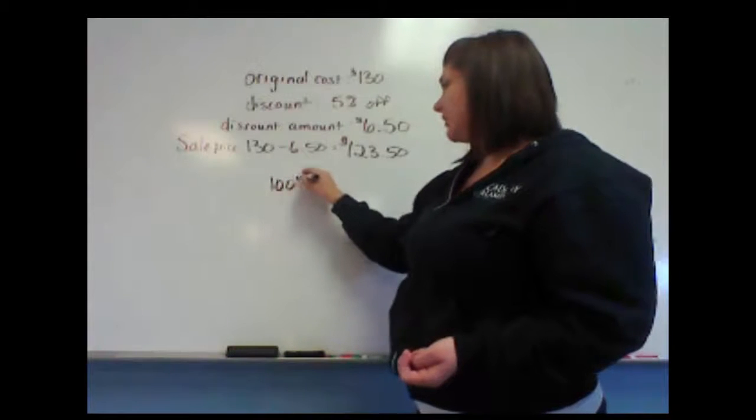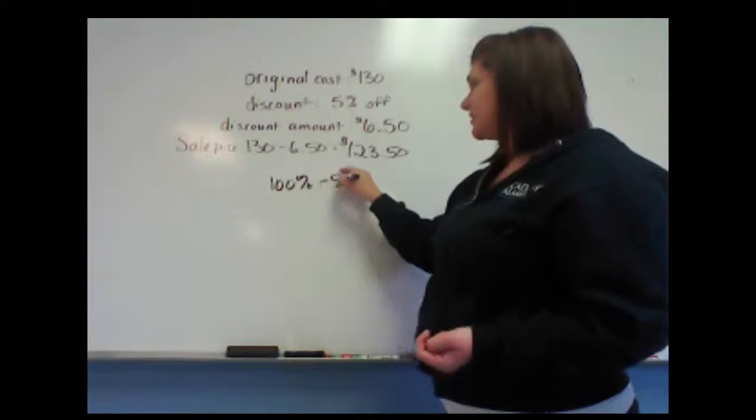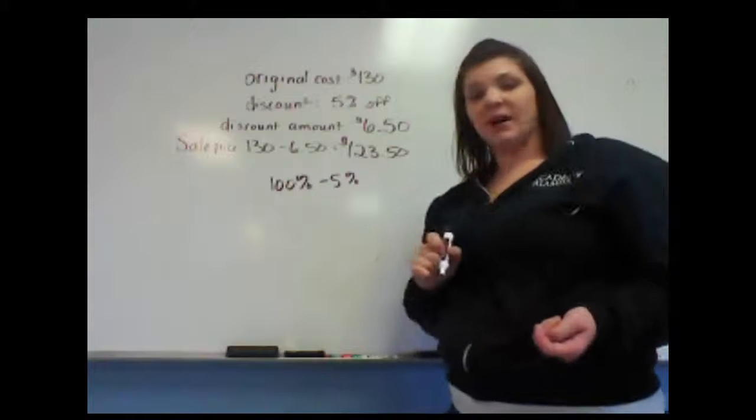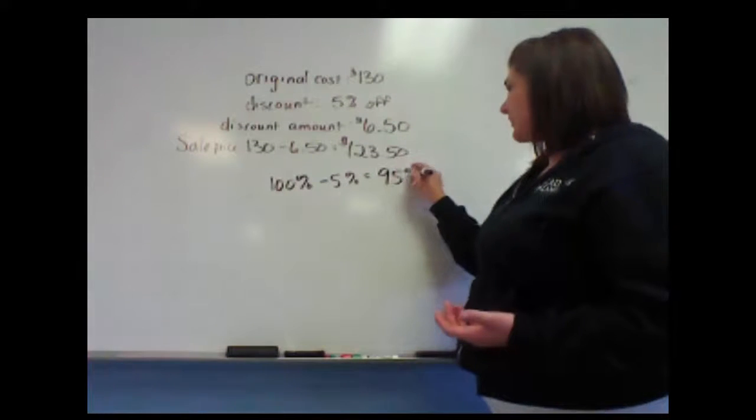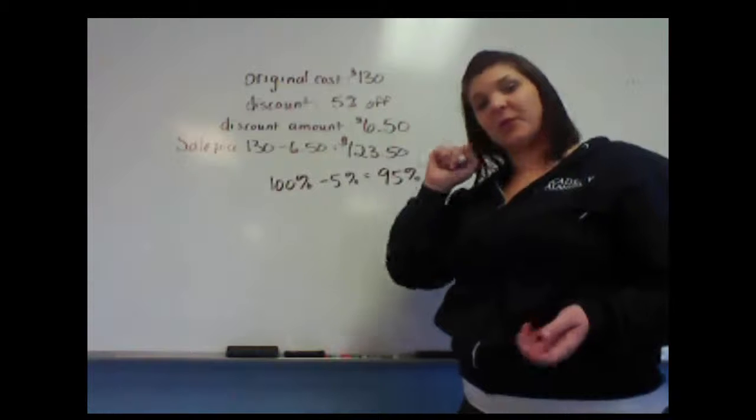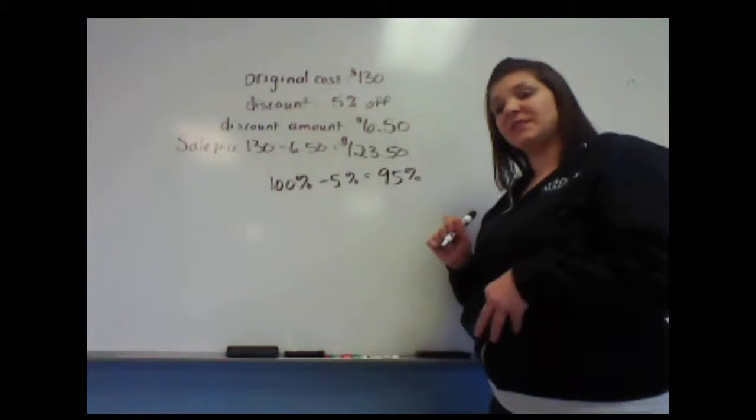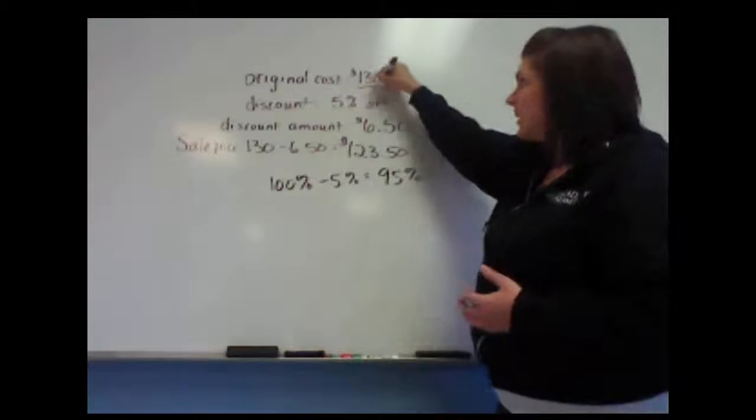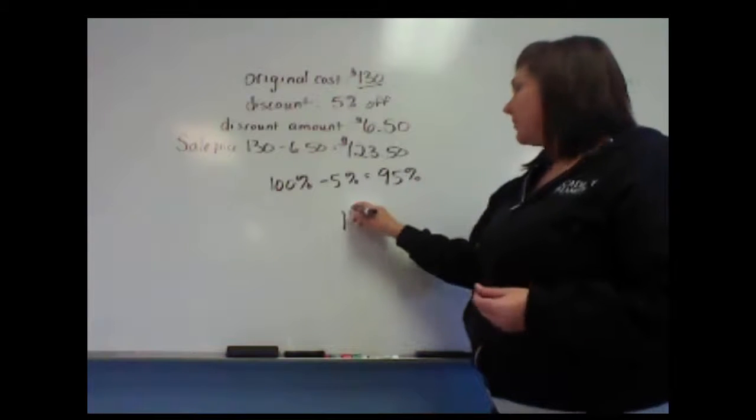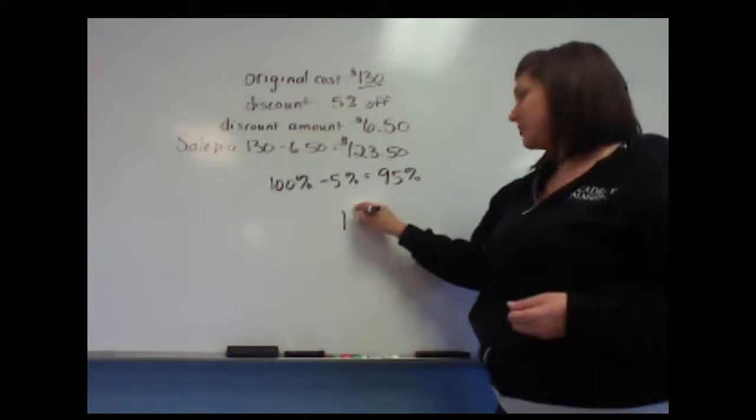Our original cost is 100% of the price, and if we subtract the 5% cost, that means we're going to have 95% of the price left over. So if we want to know how much is something going to cost with a 5% discount, we can take that original amount and multiply it by an equivalence of 95%. So let's try that.